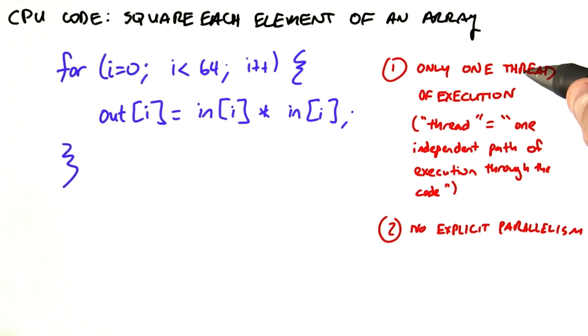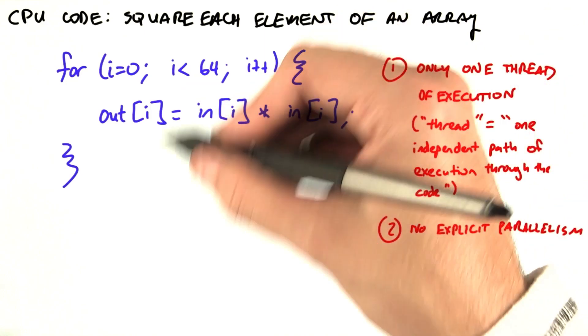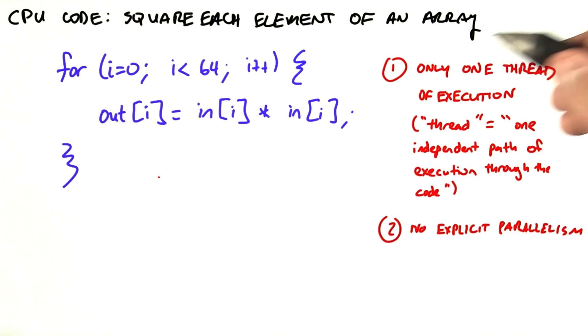One, we have only one thread of execution, and that thread explicitly loops over all of its input. We define thread here as one independent path of execution through the code. This definition is also going to apply to our GPU code.